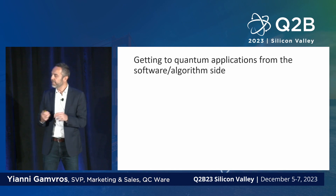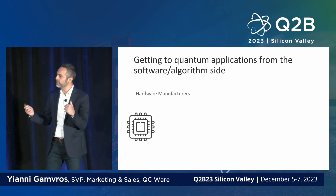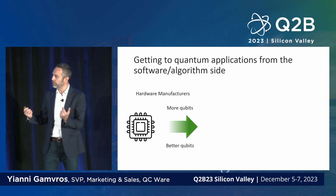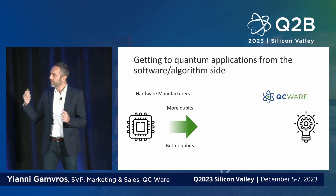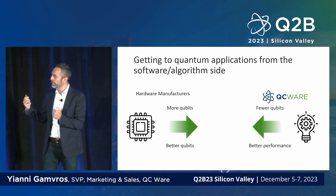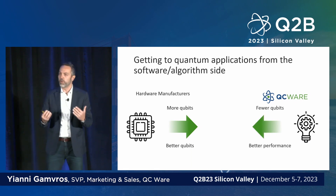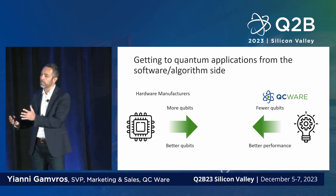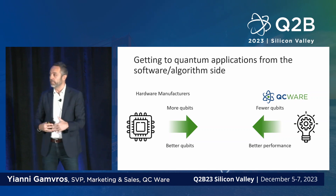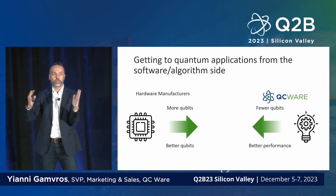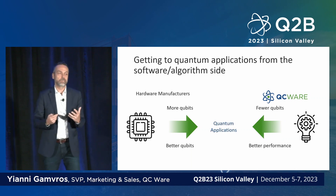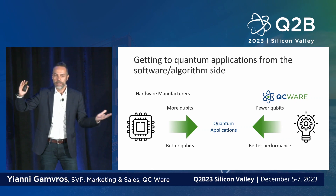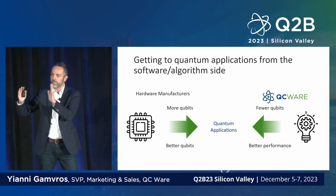The first thing I want to highlight is how we're different from hardware vendors. Hardware manufacturers talk about building computers with more qubits and better quality qubits. When you hear us, it's all about using fewer resources on the quantum hardware — reducing from, say, a hundred thousand gates down to ten thousand gates, or getting better performance with the same number of gates. These are two fronts that have to meet in the middle to reach practical quantum advantage.